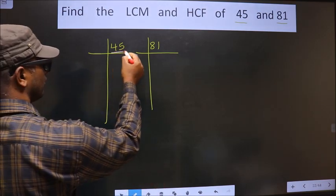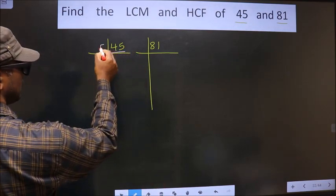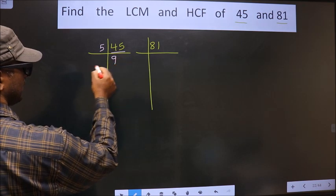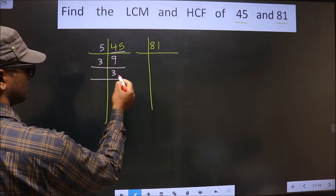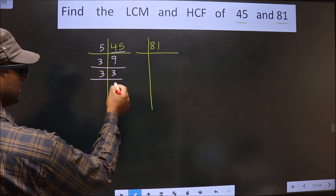Now here we have 45. 45 is nothing but 5 times 9. Now 9 is 3 times 3. Now 3 is a prime number so we take 3 once 3.